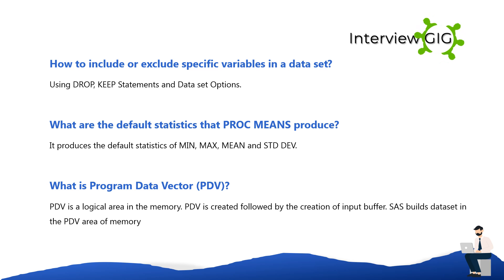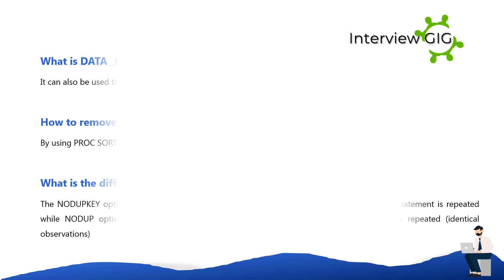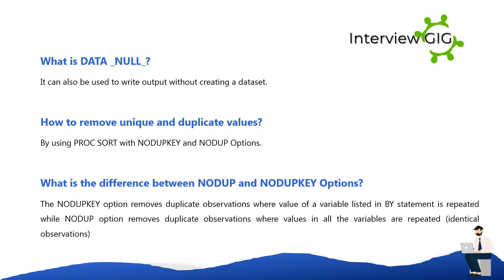SAS builds data sets in the PDV area of memory. What is DATA _NULL_? It can be used to write output without creating a data set. How to remove unique and duplicate values? By using PROC SORT with NODUPKEY and NODUP options.